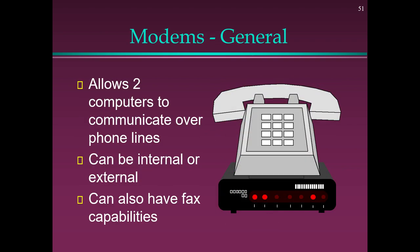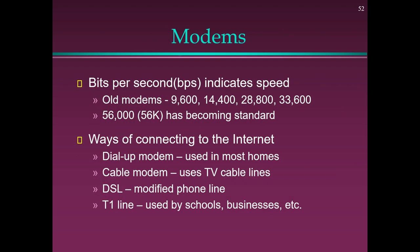Modems: Allow two computers to communicate over telephone lines. Can be internal or external, and may also have fax capabilities. Speed is measured in bits per second (BPS). Old modems ran at 9600, 14400, 28800, 33600 bps; 56k (56,000 bps) is becoming the standard. Ways of connecting to the internet: dial-up modem (used in most homes), cable modems (use TV cable lines), DSL (modified phone line), and T1 lines (used by schools, businesses, etc.).